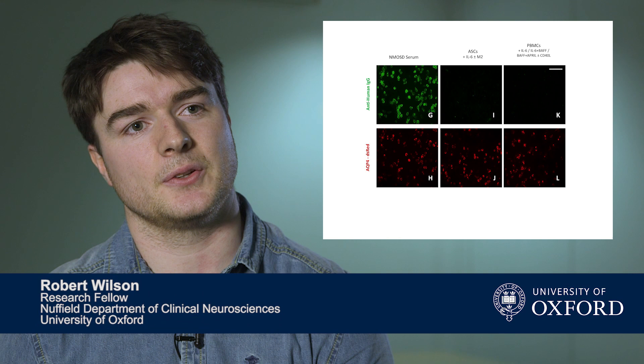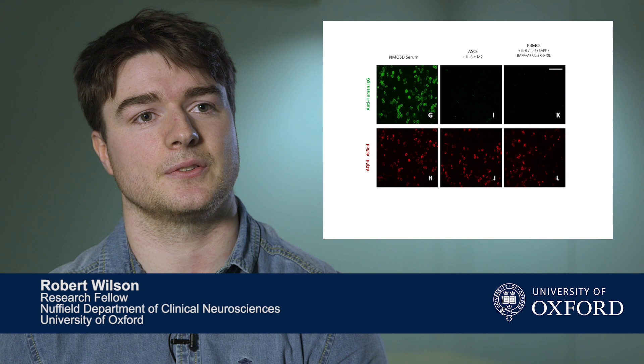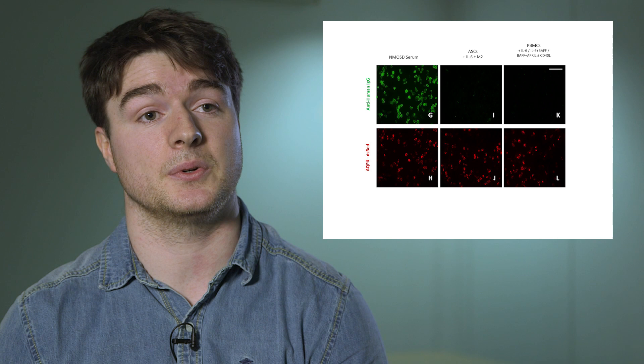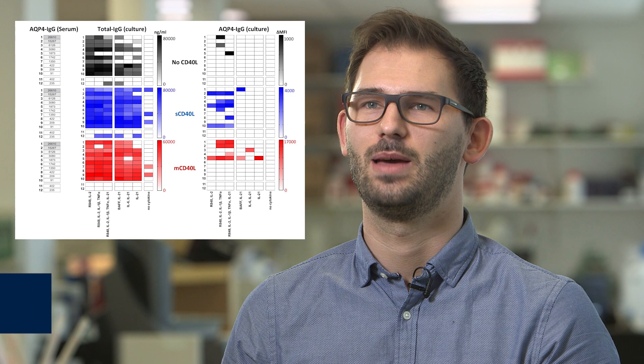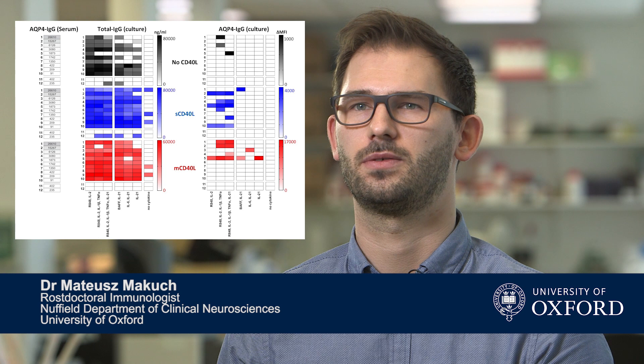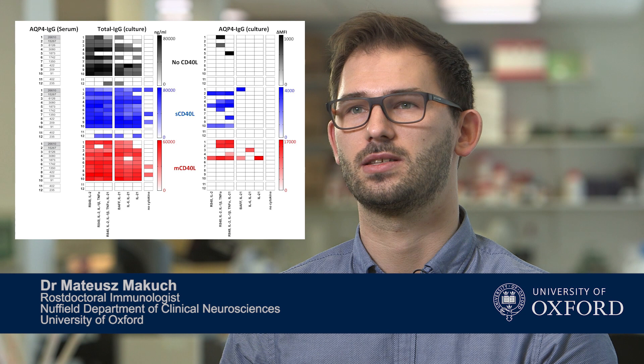Antibody secreting cells were sorted from total peripheral blood mononuclear cells and cultured in conditions shown to maintain antibody secreting cells, such as IL-6. While we were able to detect considerable total antibody in these cultures, we were not able to detect any aquaporin-4 specific antibodies. PBMCs from all patients except those treated with rituximab produced IgG in culture. The production of aquaporin-4 antibodies was almost exclusively dependent on the presence of CD40 ligand, and the best stimulating conditions included TLR ligand R848 and IL-2.